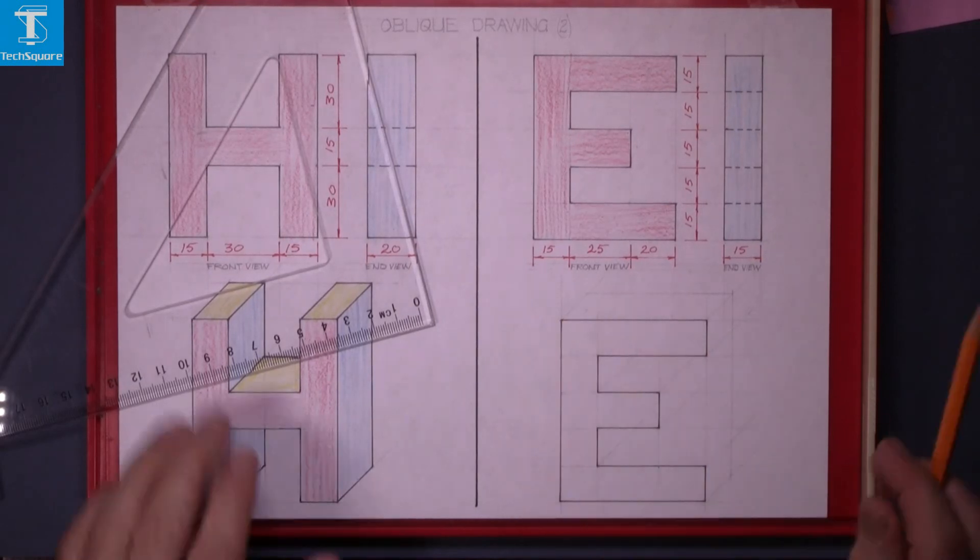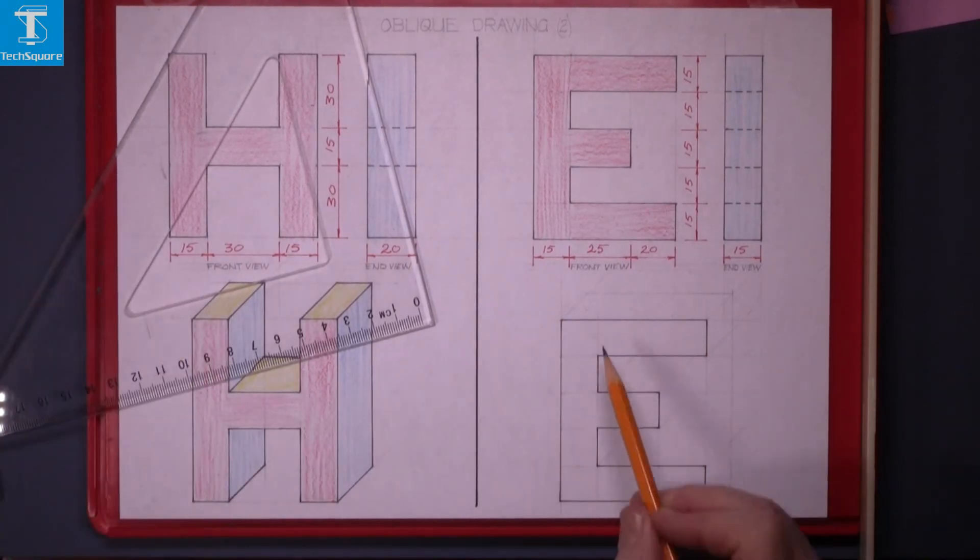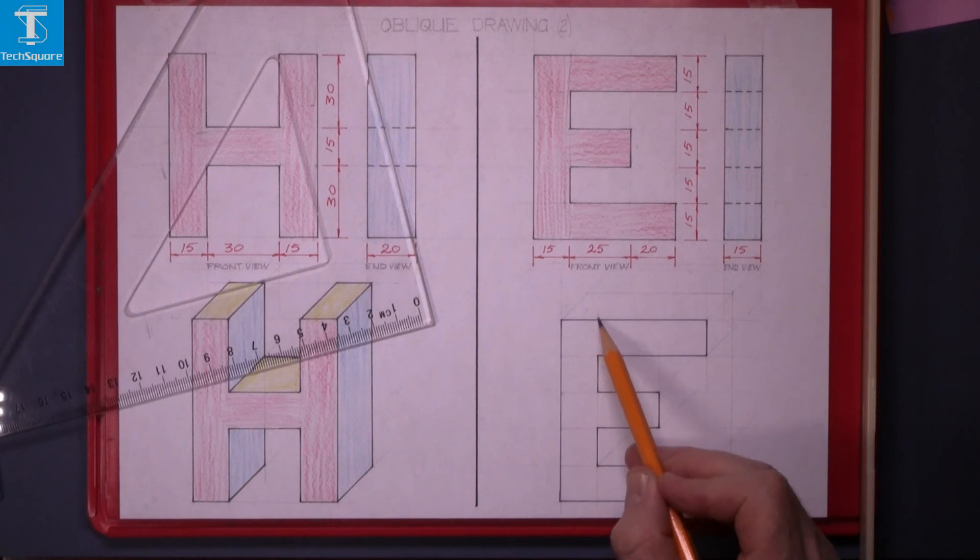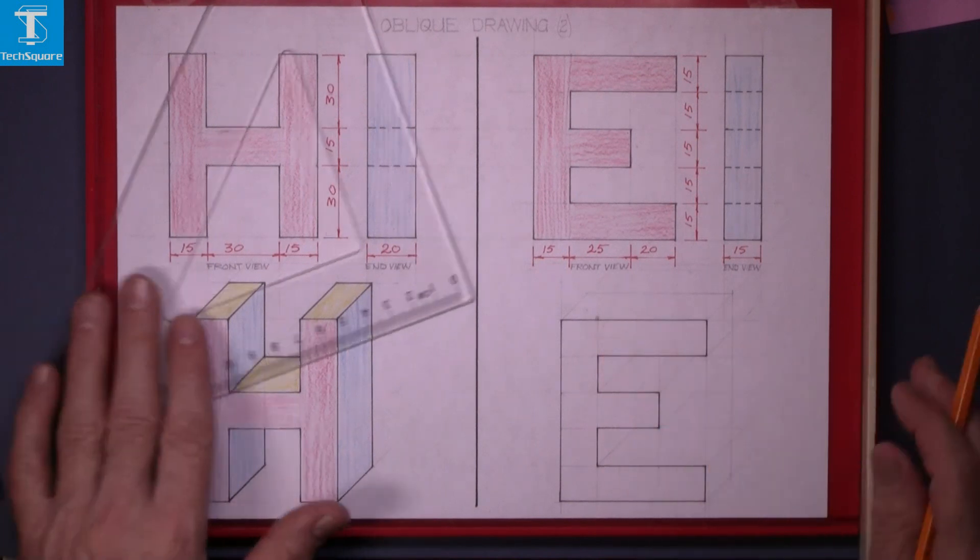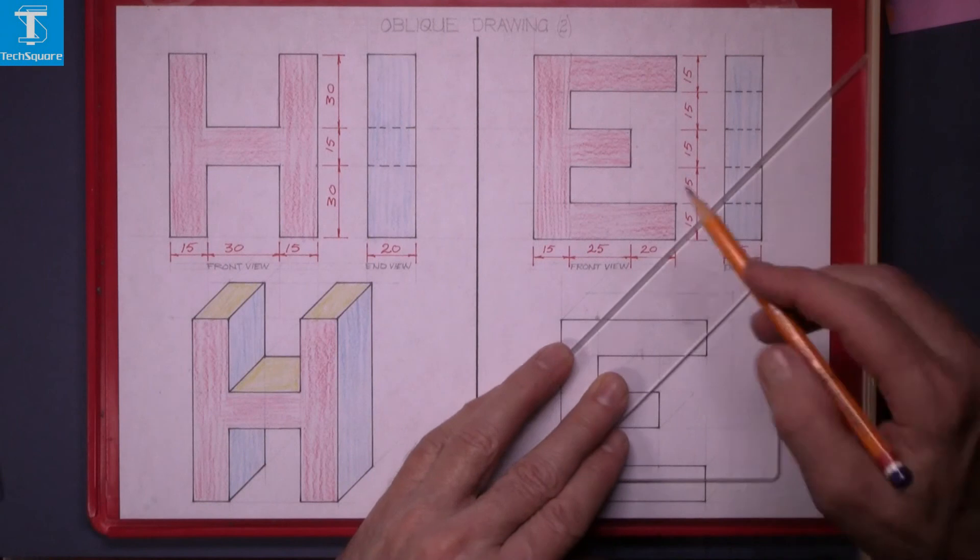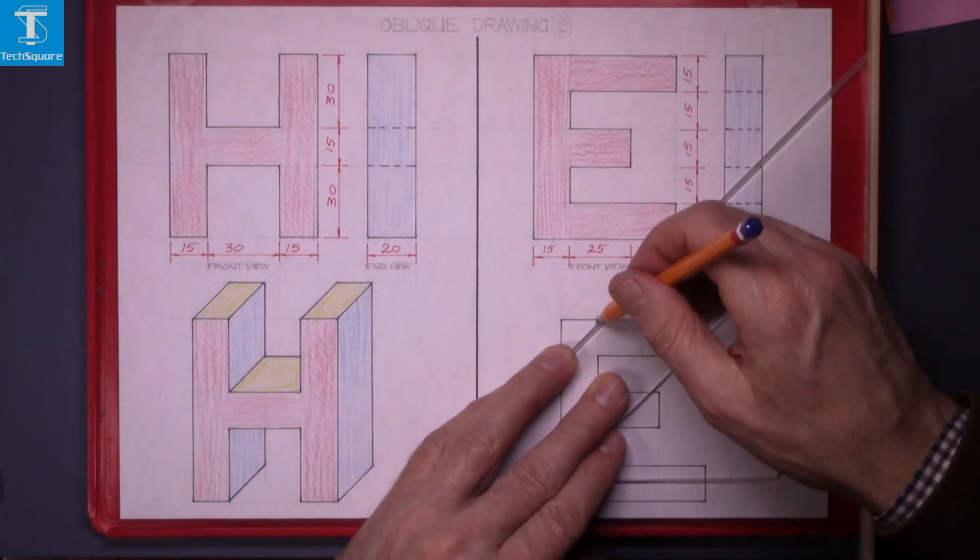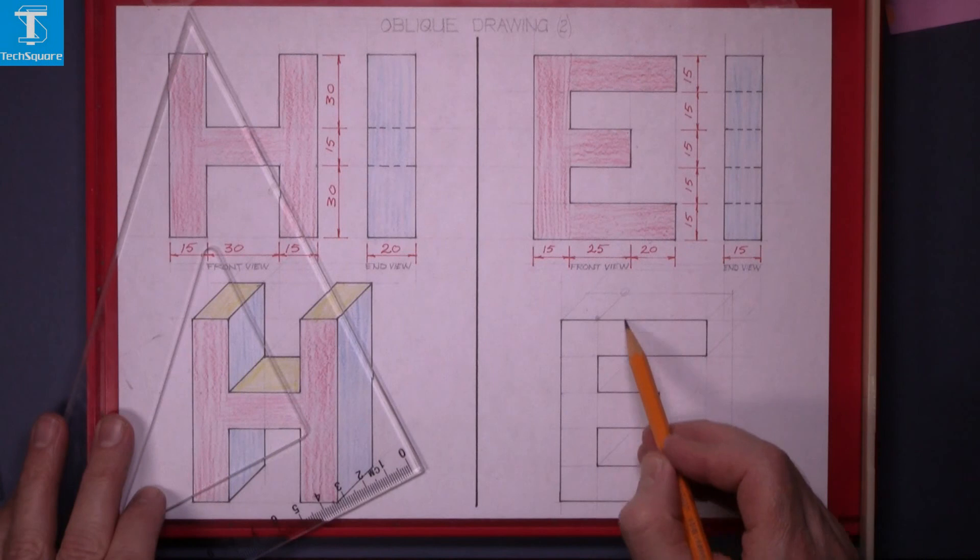Now we need to find the back in here. So bring this line up to that point and draw it back across the 45 degrees to the back there. That gets a point at the back.